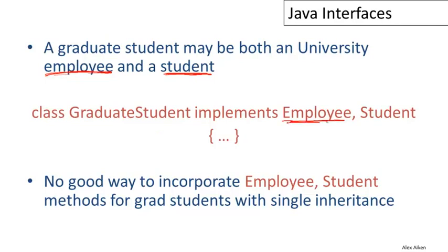And one way to do that would be if I had an interface for employees and an interface for students. Then I would say that a graduate student could be both. So a graduate student can implement both the employee interface and the student interface.